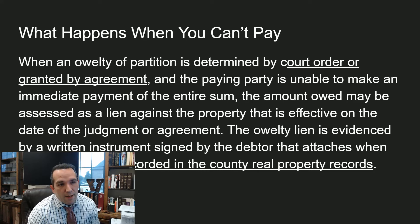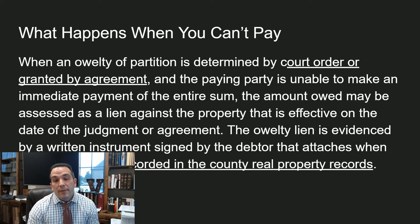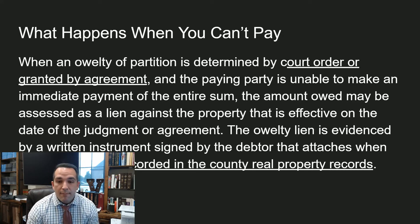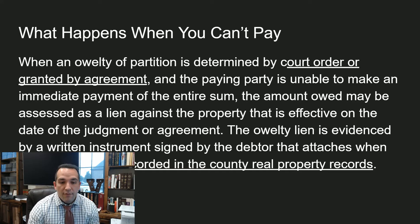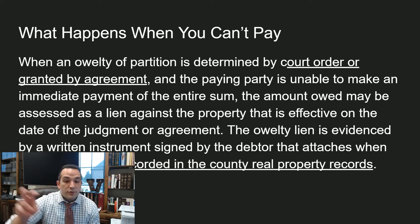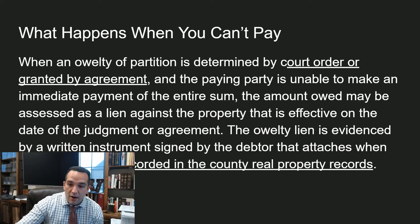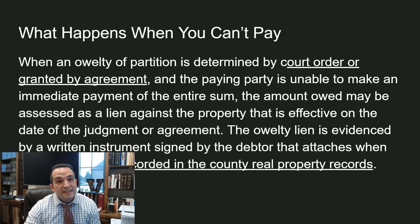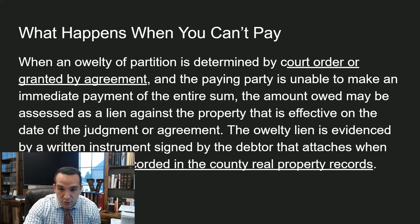What happens when you can't pay? When an oylty partition is determined by a court order or granted by agreement and the paying party is unable to make an immediate payment on the entire sum, the amount owed may be assessed as a lien against the property effective on the date of the judgment or agreement. The oylty lien is evidenced by a written instrument signed by the debtor that attaches when the instrument is recorded in the county real property records. You have to record these — they're not valid until recorded.